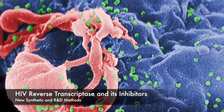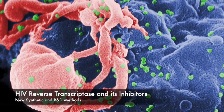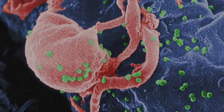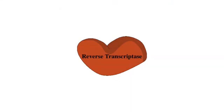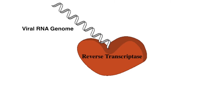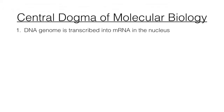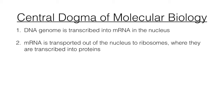Reverse transcriptase inhibitors are a large class of antiretroviral drugs used to treat HIV. The cycle of HIV replication relies on reverse transcriptase, or RT, which takes an RNA template and creates a complementary double-stranded DNA molecule. This violates the central dogma of molecular biology, which states that gene expression always begins with transcribing DNA into RNA, and then translating that into proteins.